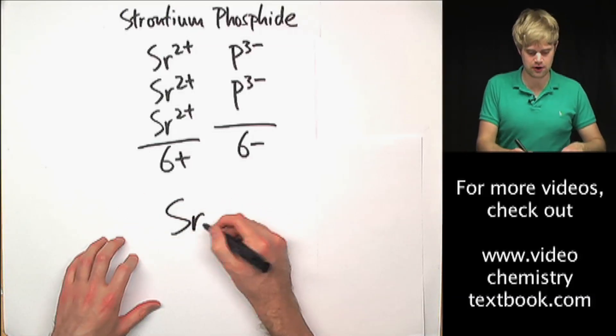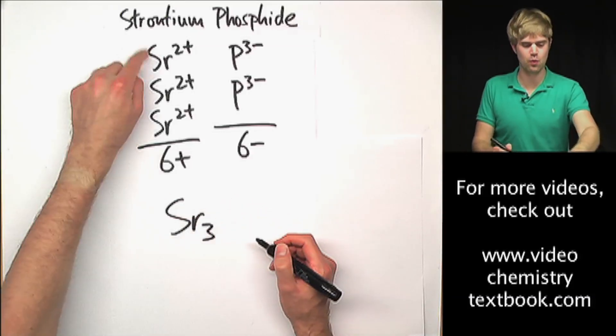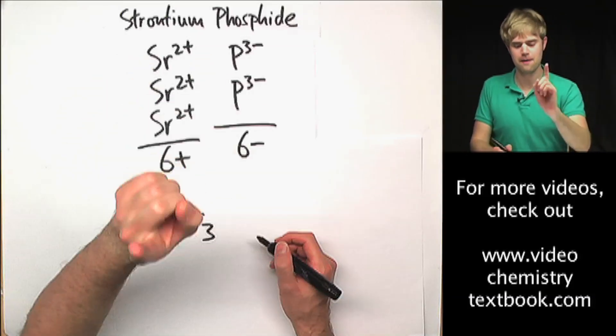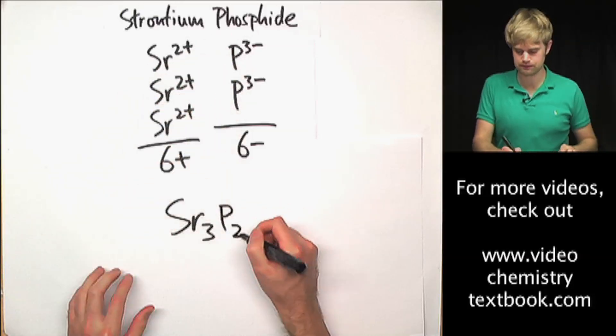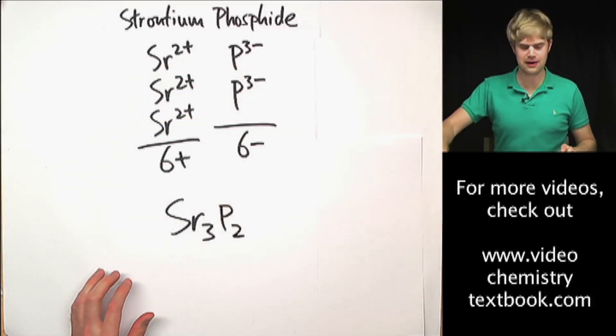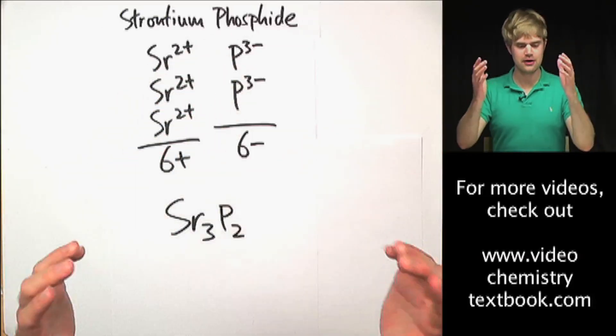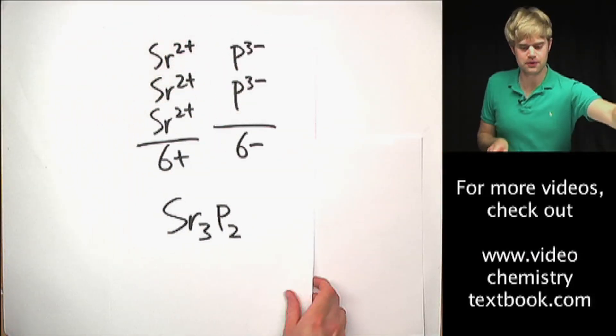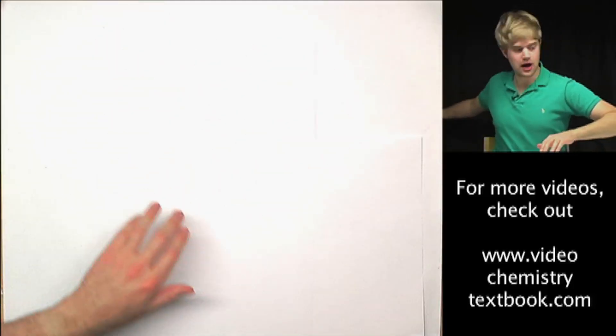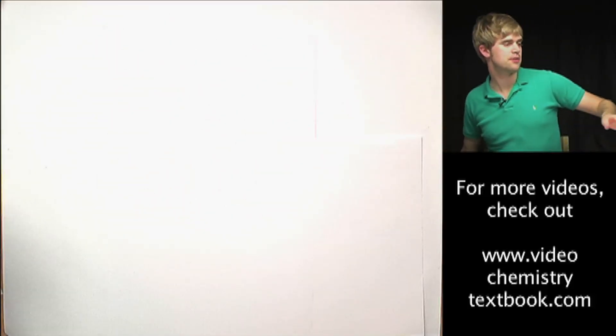I'm going to write Sr₃P₂. So that's how we write formulas for these ionic compounds.